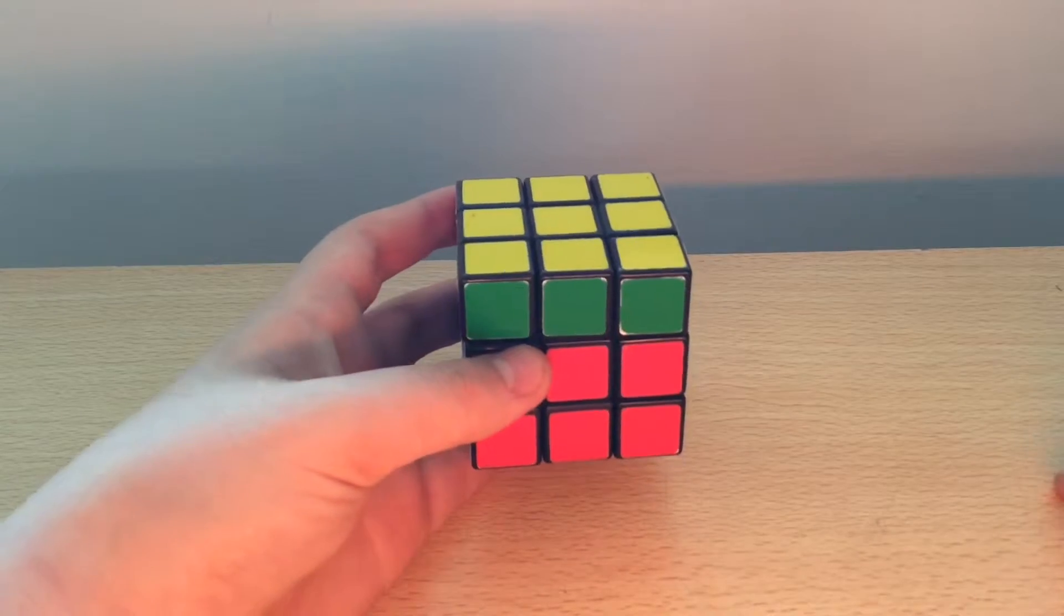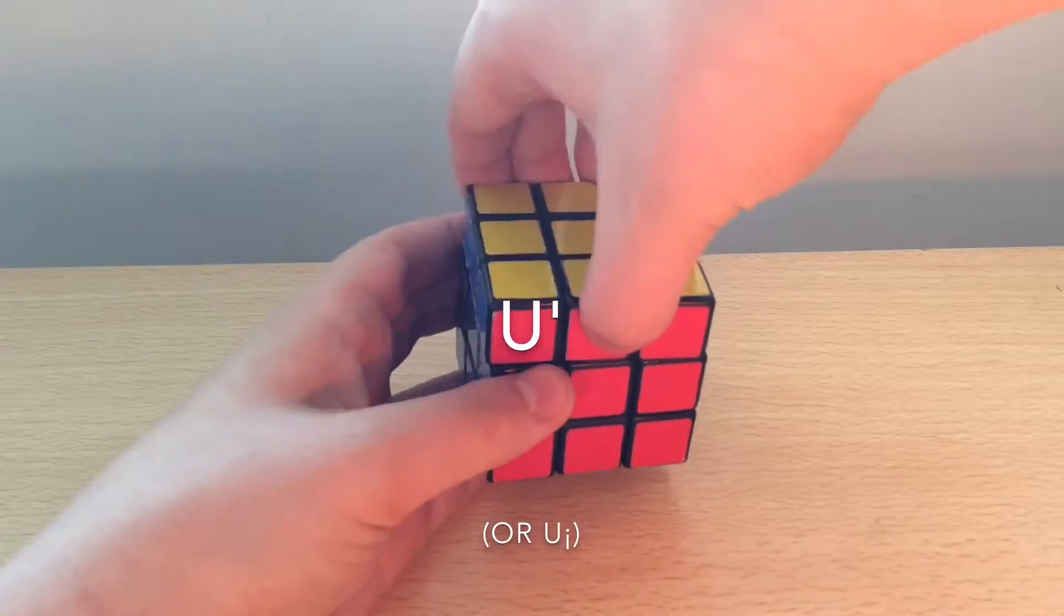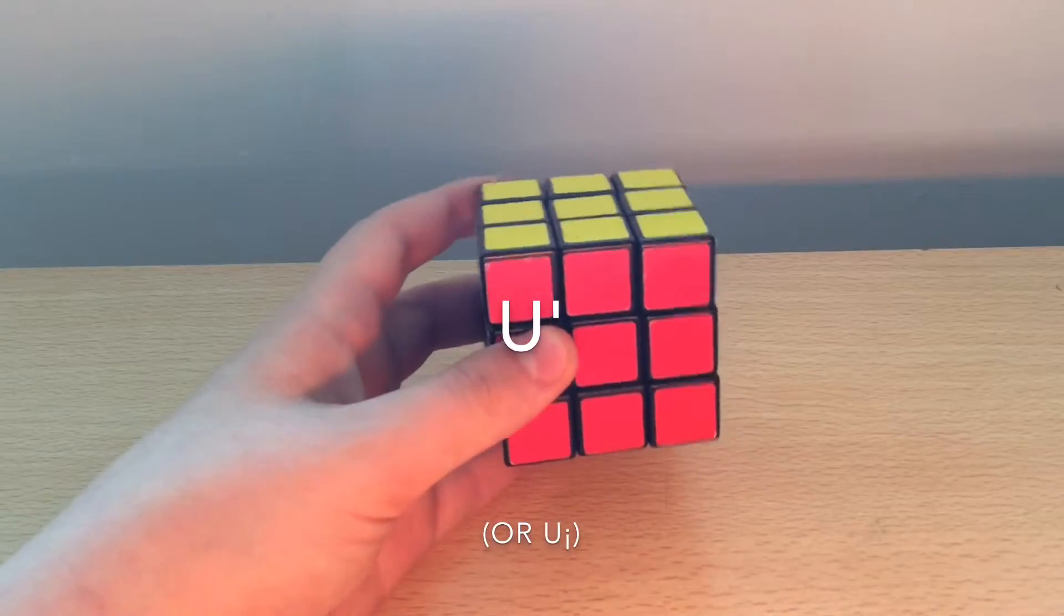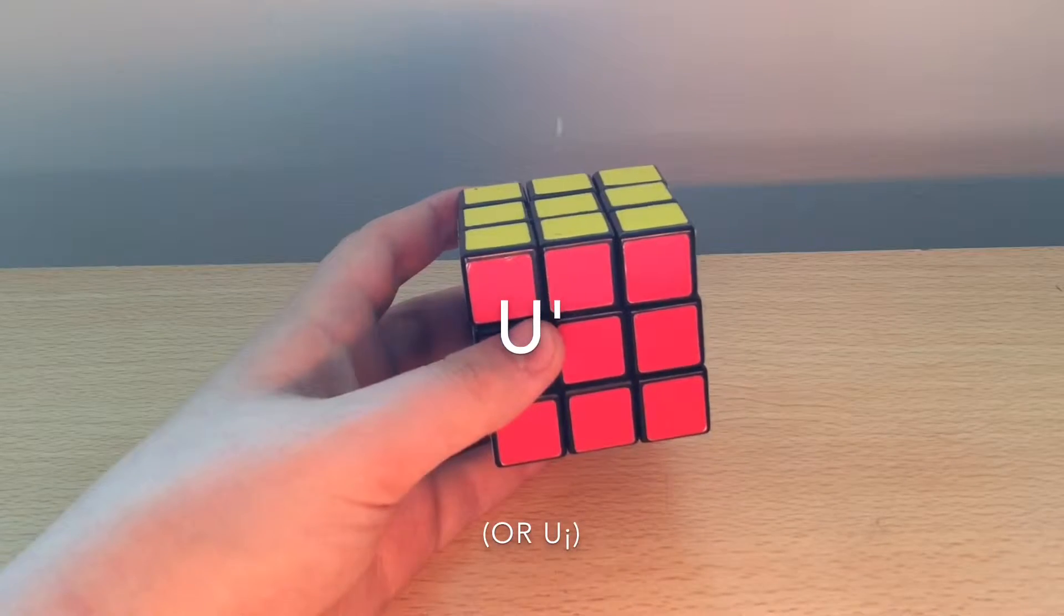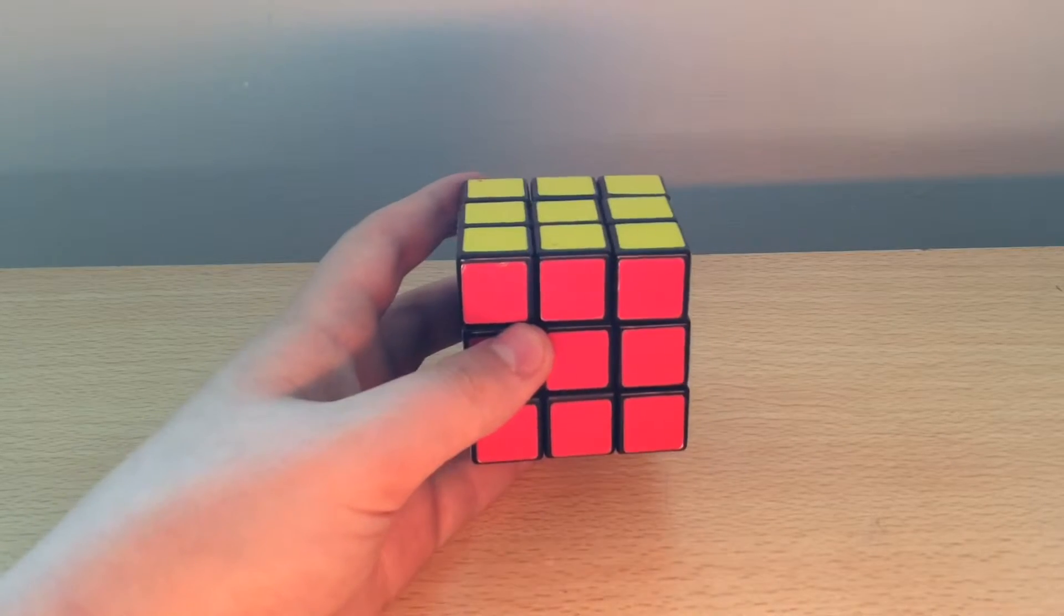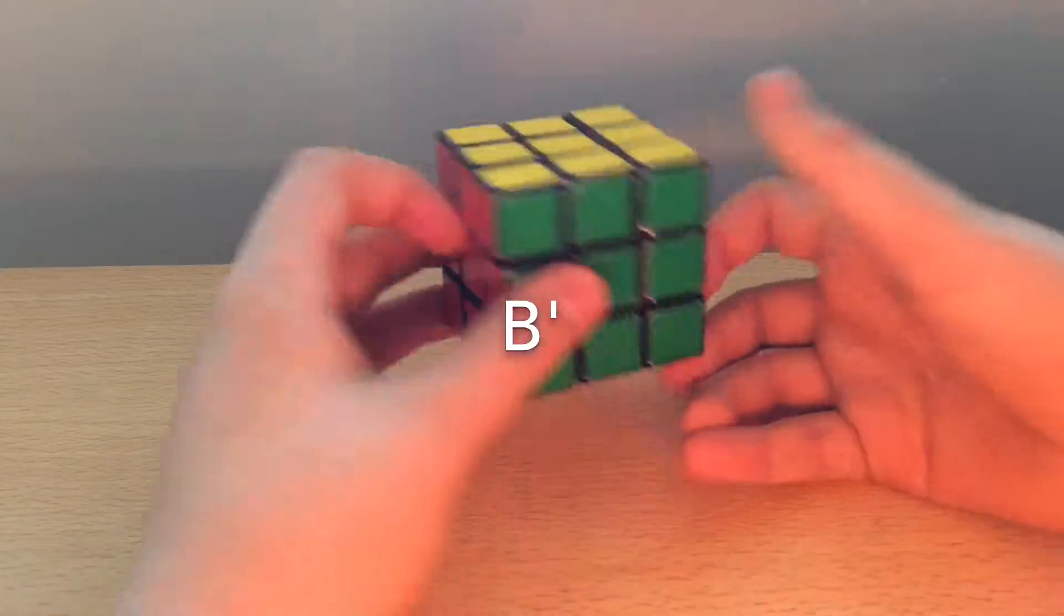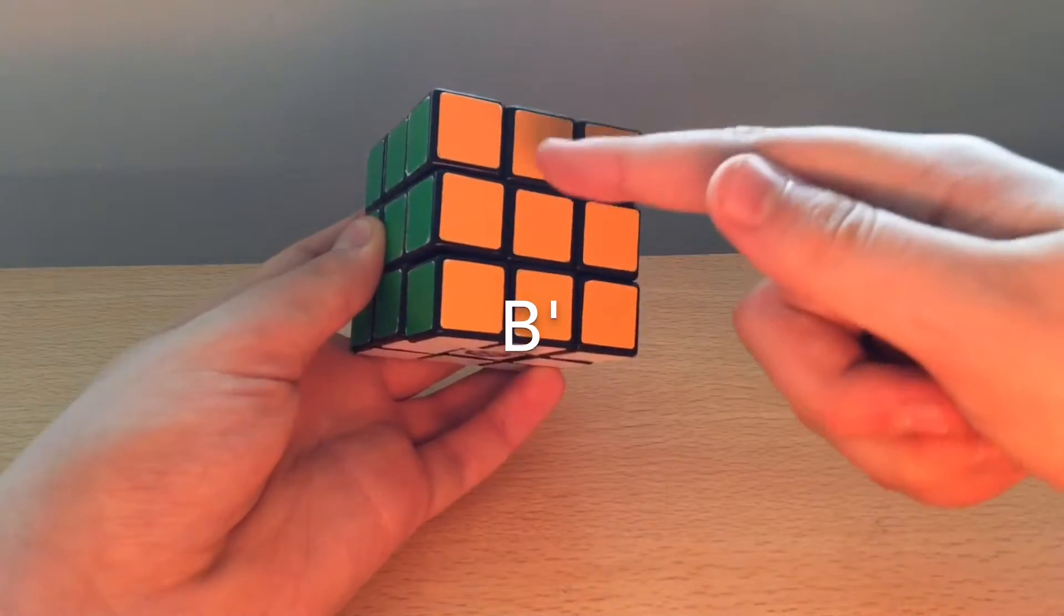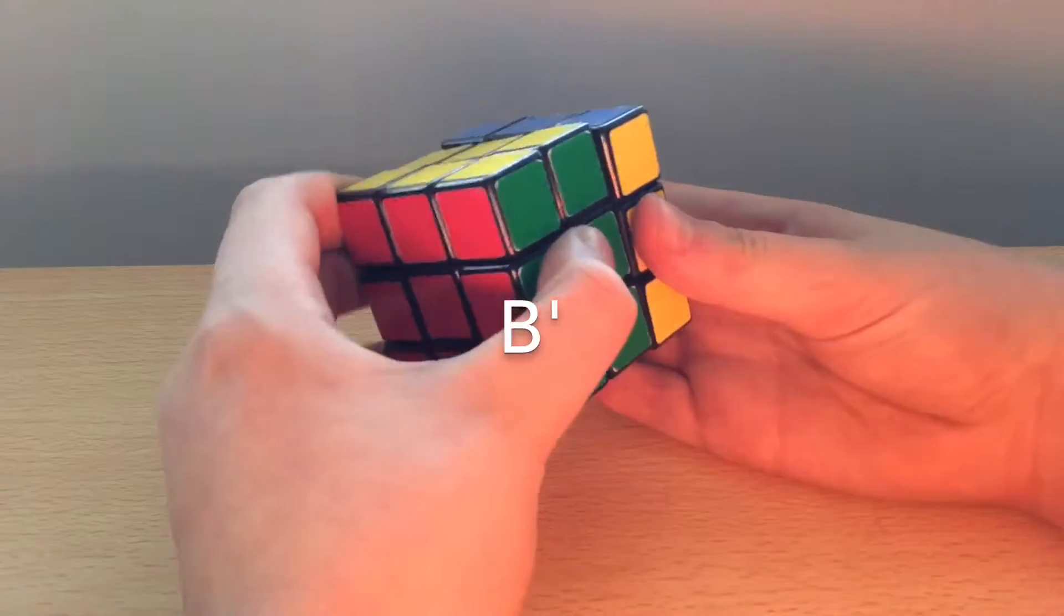Now if we wanted to move a face anti-clockwise, we would use U prime or U dash or U inverted. So if you see a dash or a prime or U inverted, that means that it is anti-clockwise. So if we had the move B dash, we would locate the back face, which is this orange face here. Going anti-clockwise would be that way, which means the B dash move would look like this.